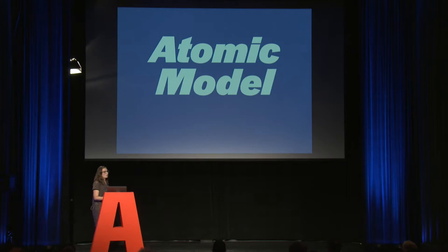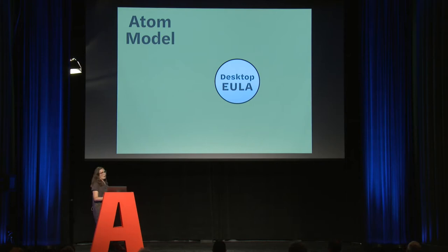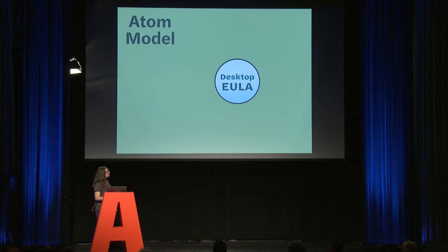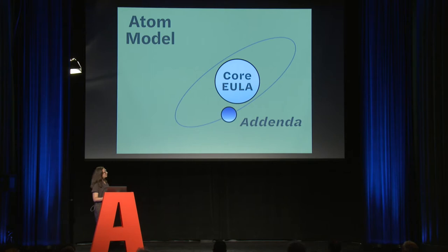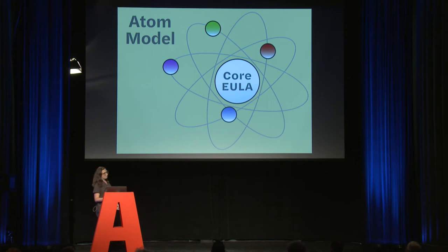There's a new paradigm that's starting to get traction, and we'll call it the atomic model. Everyone already refers to the desktop license as the EULA. Under the atomic model, we double down on that — the desktop EULA becomes the Nucleus, to which we can add addenda. For example, this is a client who needs web embedding, and this is a client who needs web, app, distribution, and a period of exclusivity for a custom font. Complicated, huh? There's a way to manage that.